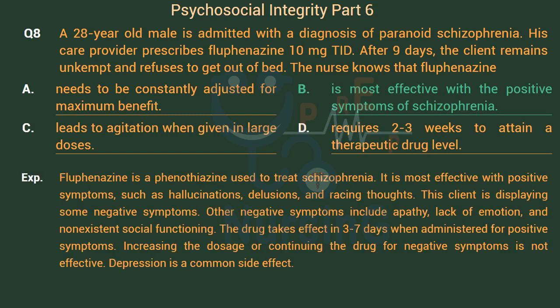Fluphenazine is a phenothiazine used to treat schizophrenia. It is most effective with positive symptoms, such as hallucinations, delusions, and racing thoughts. This client is displaying negative symptoms. Other negative symptoms include apathy, lack of emotion, and diminished social functioning. The drug takes effect in 3-7 days when administered for positive symptoms. Increasing the dosage or continuing the drug for negative symptoms is not effective. Depression is a common side effect.